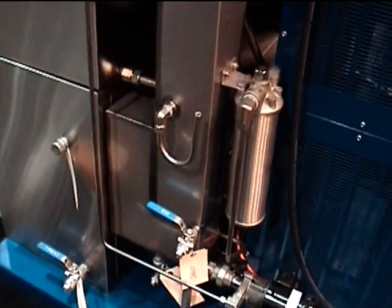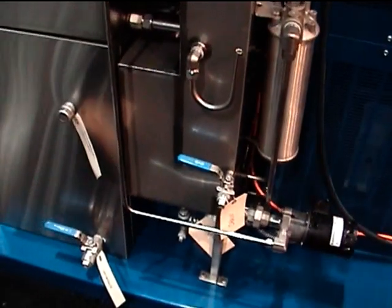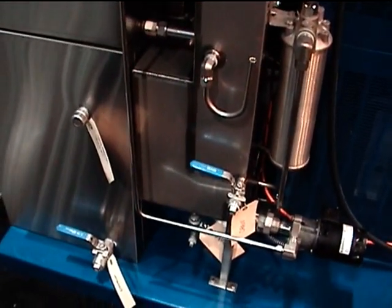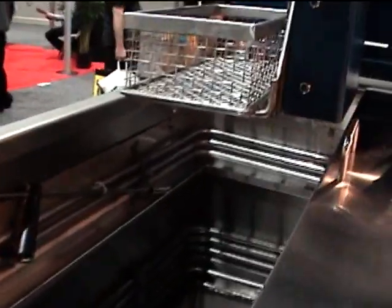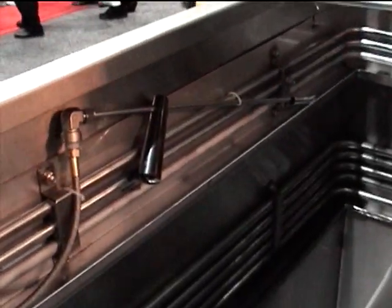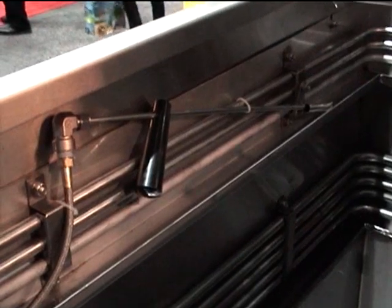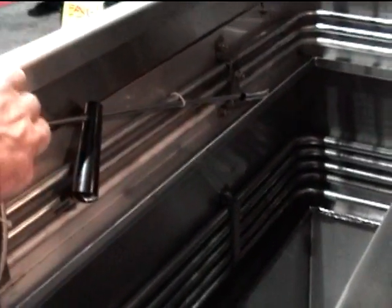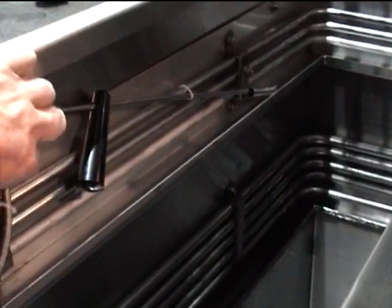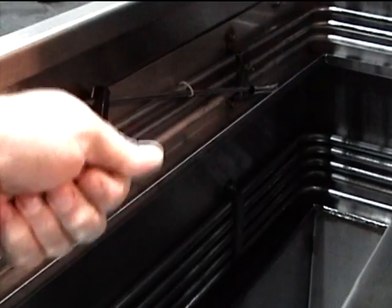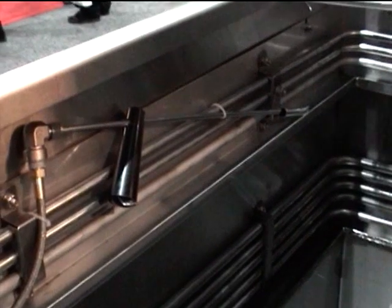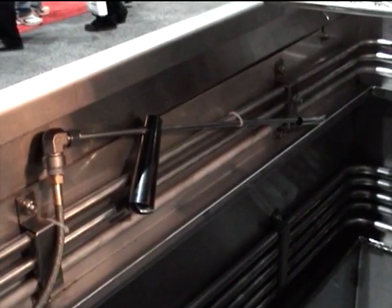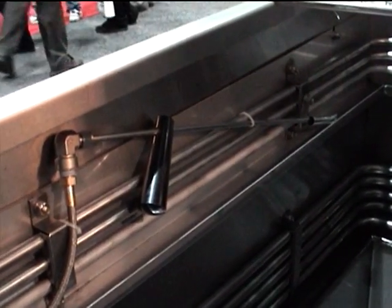And then we have a spray wand right here. This is where, if you want to, you can use this wand. See this spray wand right here? This spray wand can be used to manually clean off the parts. This one's attached, I can't get it off. But you can use it to spray off the parts if you need to. That's only in the cases of some really tough contamination.